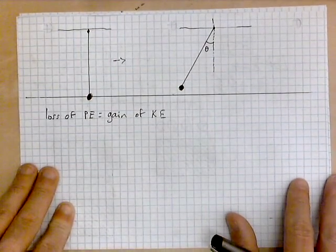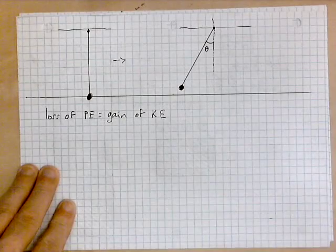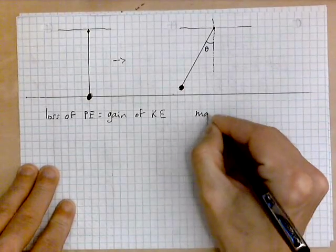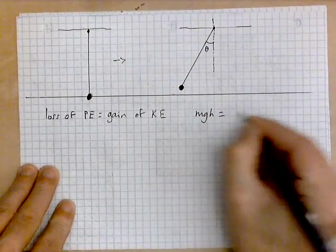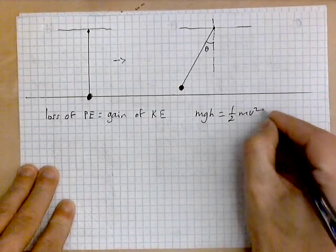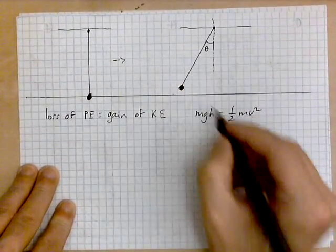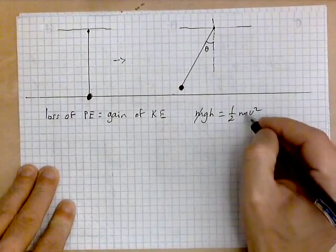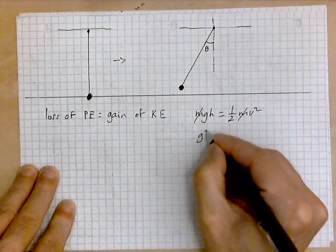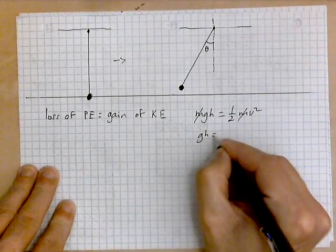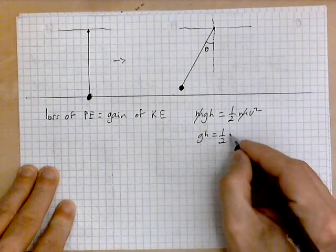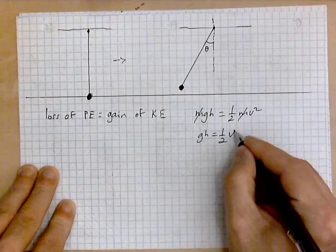We set up the mathematics: mgh equals one-half mv squared. Notice that the m's cancel, and all that remains is gh equals one-half v squared.